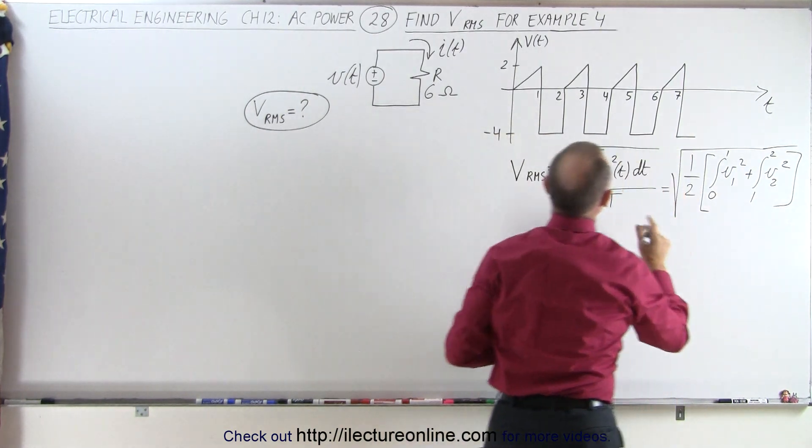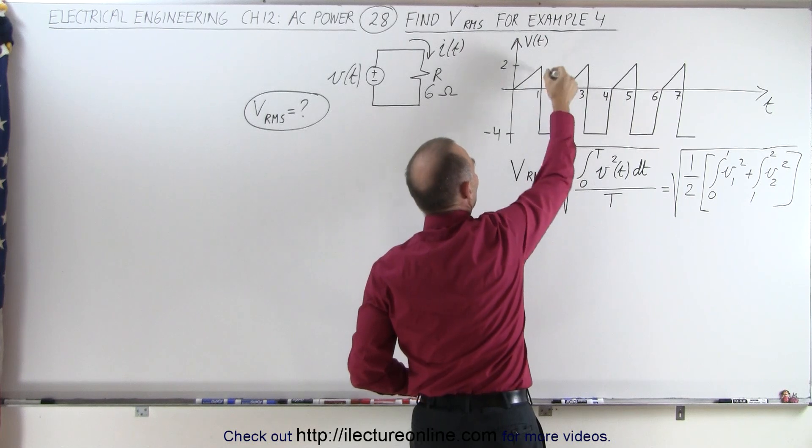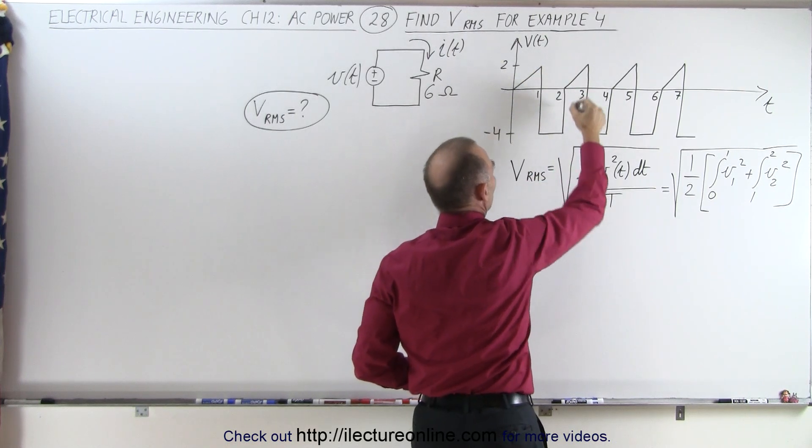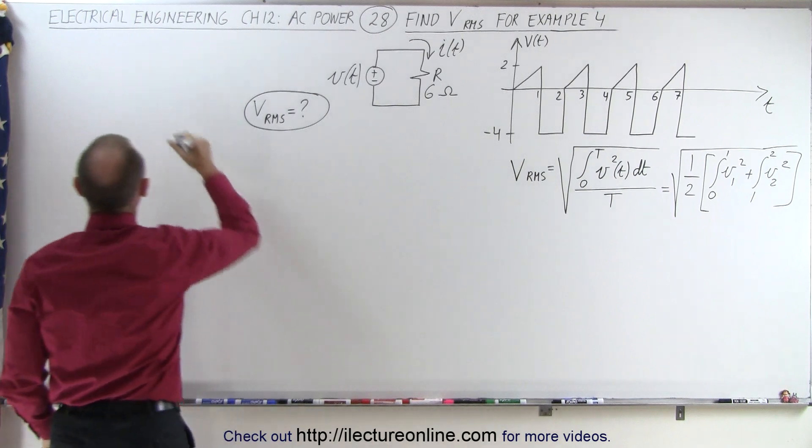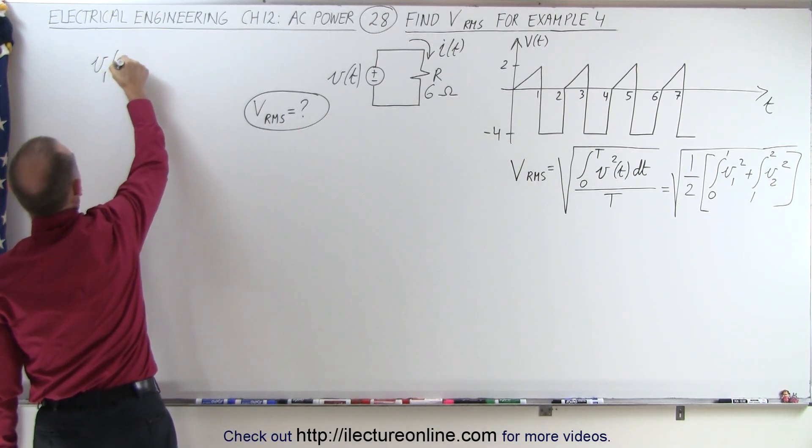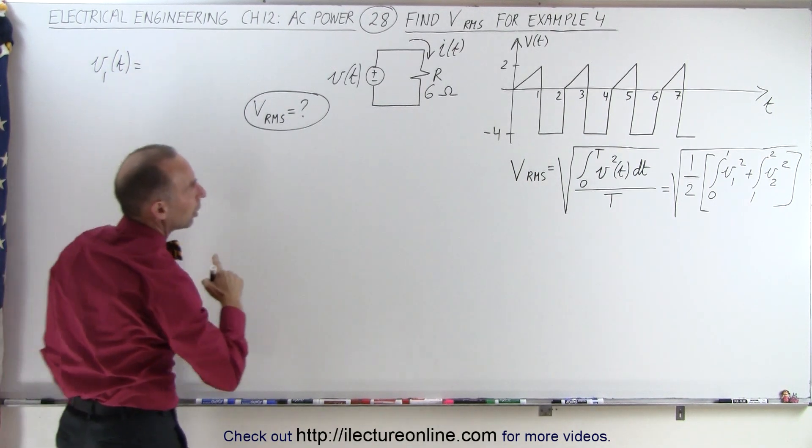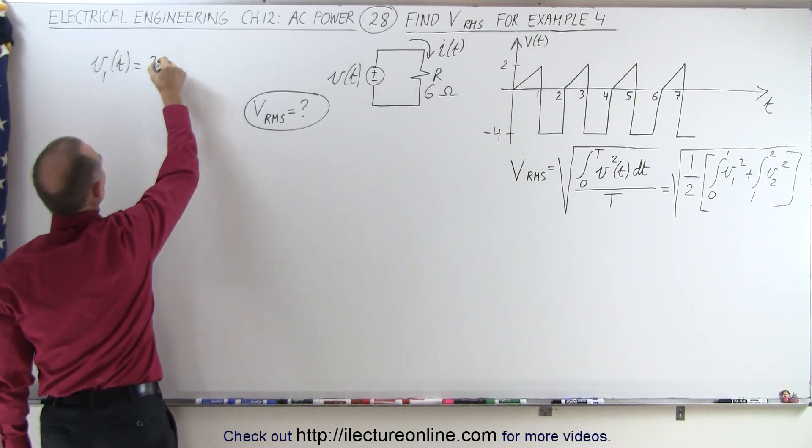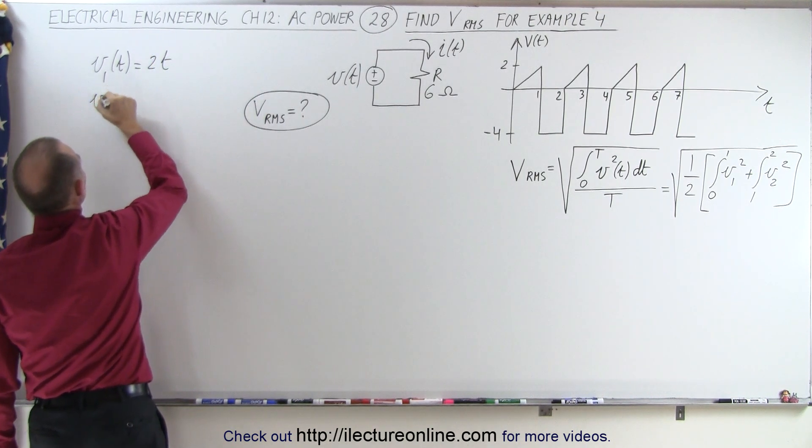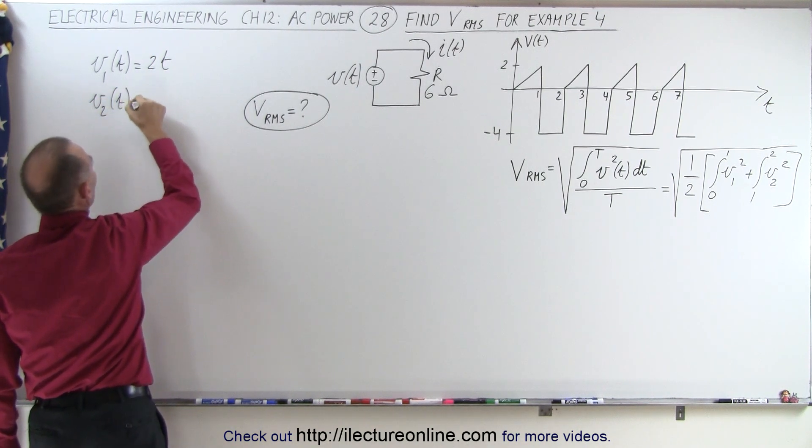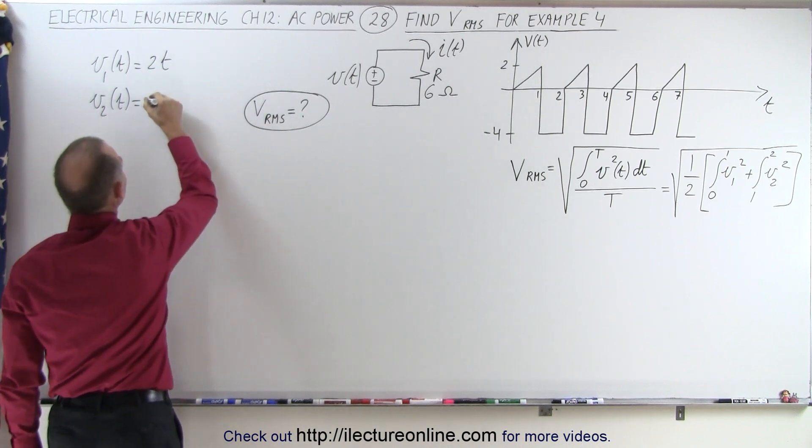So notice we're going to have an equation describing this slope right here and an equation describing the function over here. So what we can do here is say that V1 of time is equal to, looks like the slope is 2, that would be 2 times T, and V2 as a function of time would be equal to a constant negative 4.